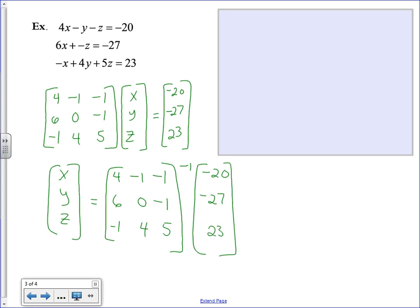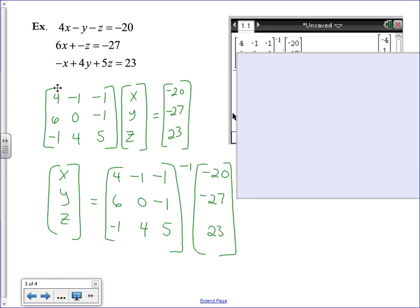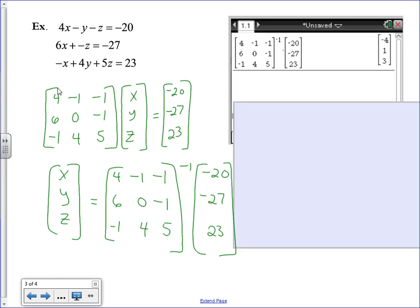So we're putting our inverse matrix, which is a 3 by 3, so it has 3 columns, by our constant matrix, which has 3 rows. And so when we do it on the calculator, we'll get the solution for X, Y, Z.